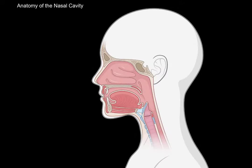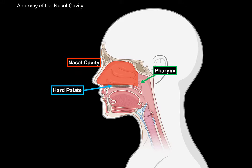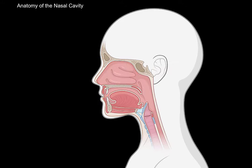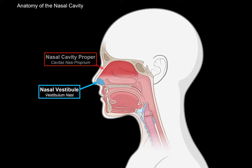Let's continue with the anatomy of the nasal cavity. Here is the nasal cavity, situated in front of the pharynx and above the hard palate. Under here, you'll find the oral cavity. The nasal cavity is divided into two parts: there's the nasal vestibule, at the nostrils, and there's the nasal cavity proper. What separates these two? Well, there's a ridge on the mucosa of the nasal cavity called the nasal limen, or limen nasi, which is generally used as a landmark to separate these two parts.